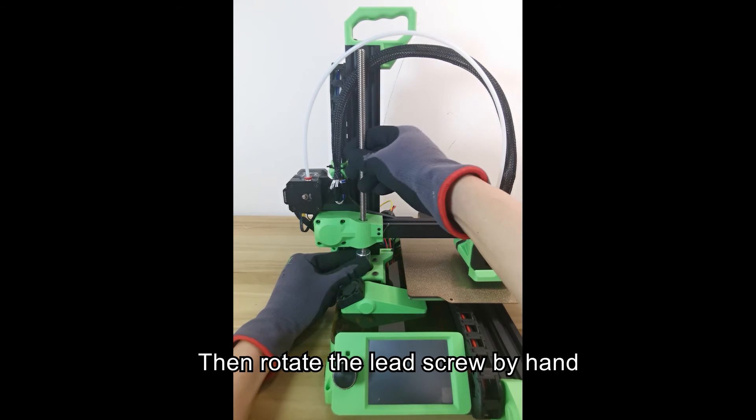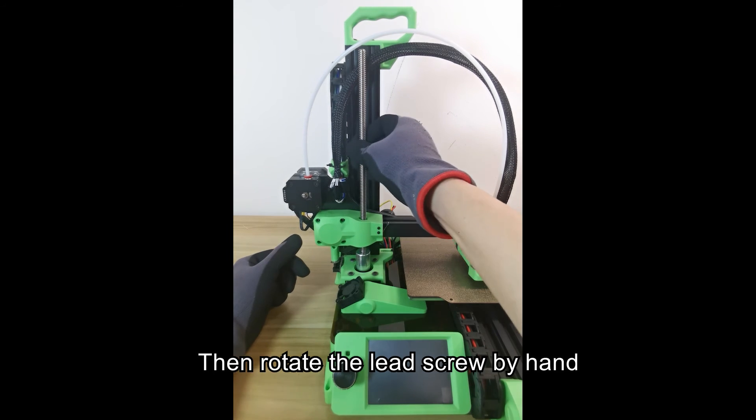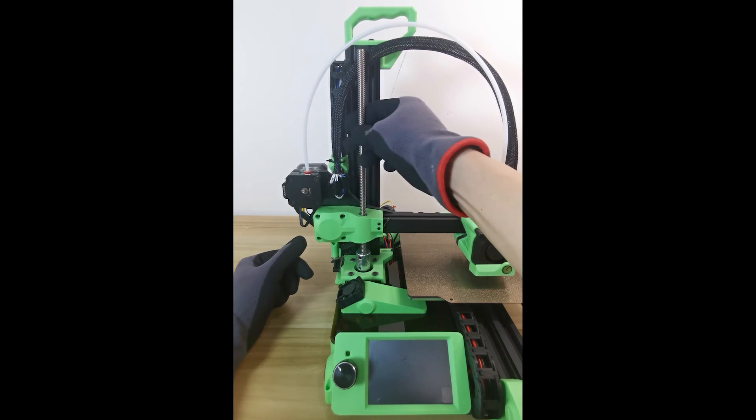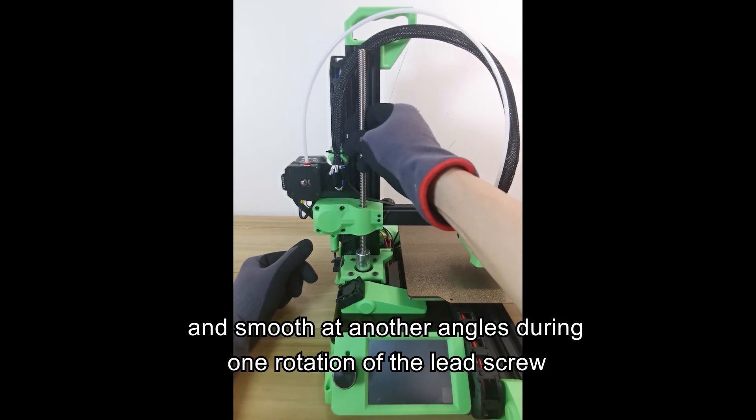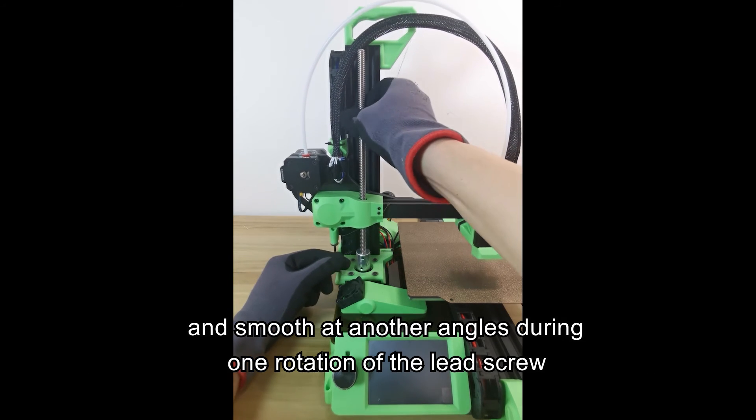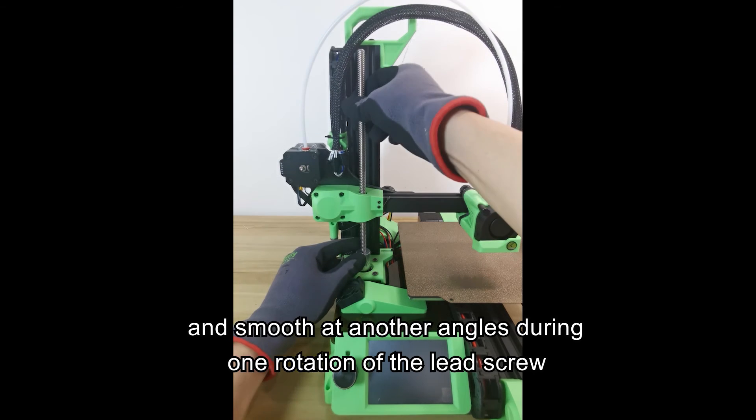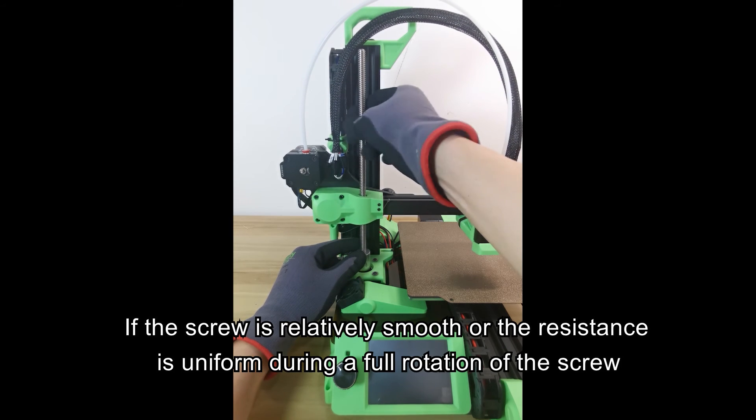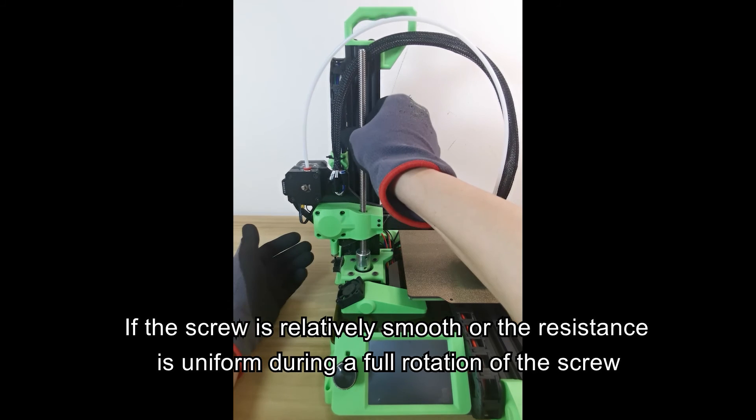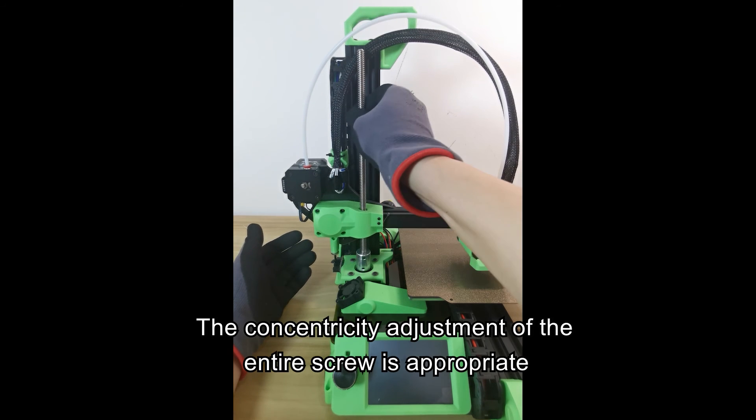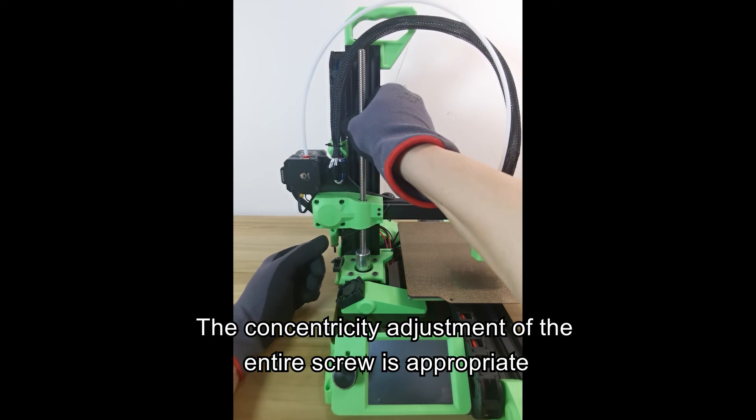Then rotate the lead screw by hand. Feel whether the lead screw will be stuck at certain angles and smooth at other angles during one rotation. If the screw is relatively smooth or the resistance is uniform during a full rotation of the screw, the concentricity adjustment of the entire screw is appropriate.